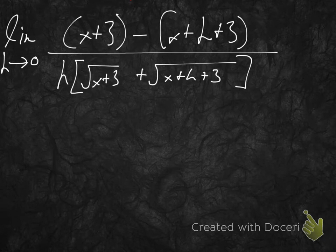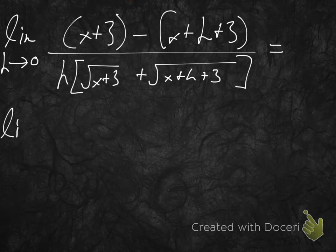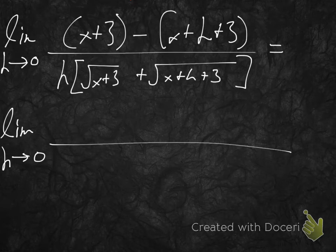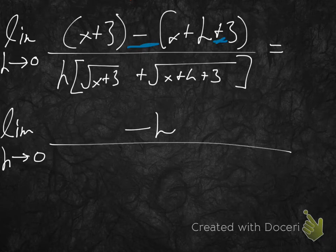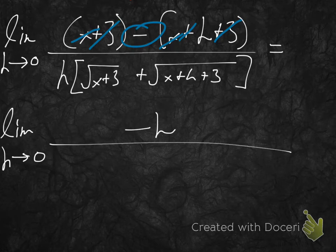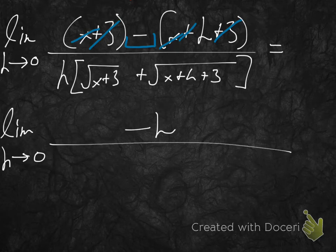This equals the limit as h approaches 0 of negative h on the numerator. Why negative h? The minus sign changes x plus h plus 3 to negative, giving us 3 minus 3 — those go away; x minus x — those go away. So we just have negative h on the numerator.